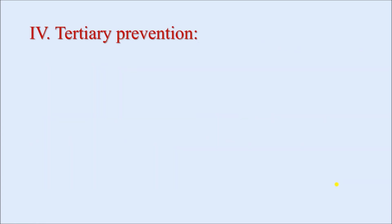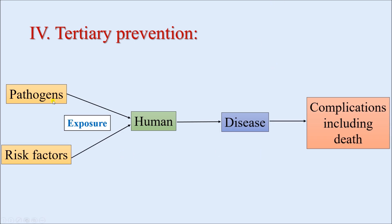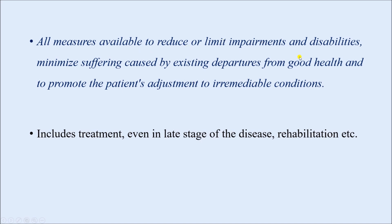Next is tertiary prevention, the last of the four levels. Here, pathogens and risk factors were present, the human population was exposed, disease developed, and complications have also developed. The disease has progressed beyond a certain point where complications have already occurred. We have to do something so that the complications can be minimized — we cannot undo what has happened, but steps are taken to control the damage as much as possible. By definition, tertiary prevention includes all measures available to reduce or limit impairments and disabilities, minimize suffering caused by the existing departure from good health, and to promote the patient's adjustment to irremediable conditions.